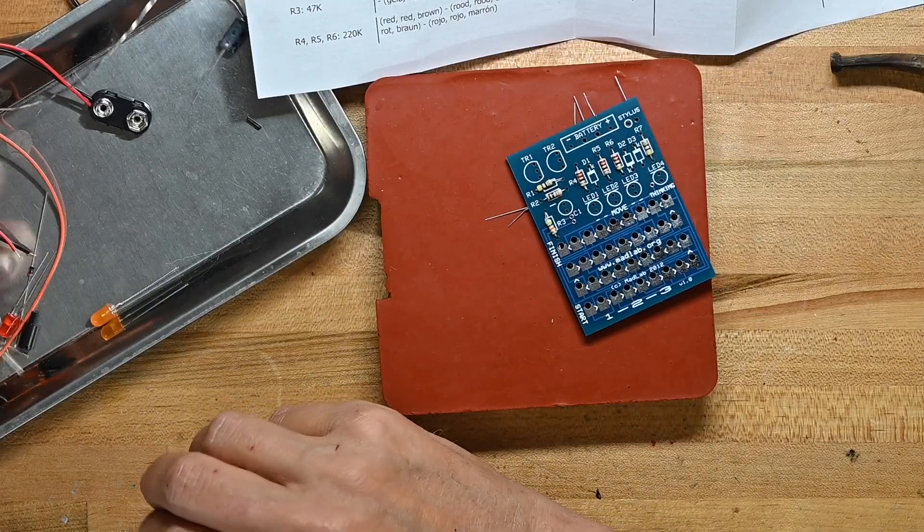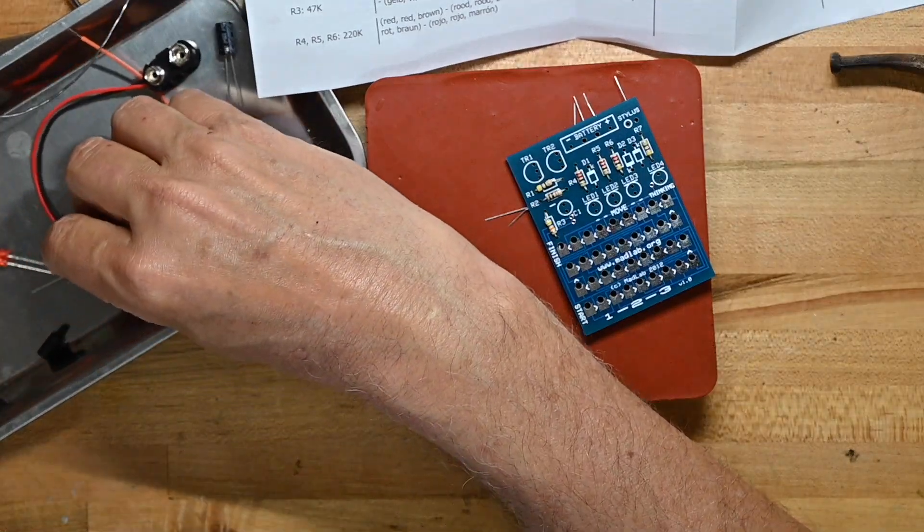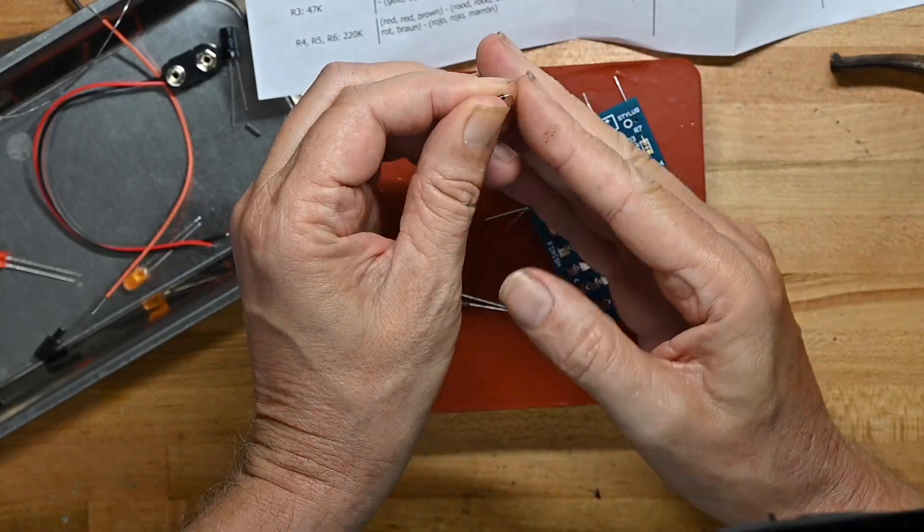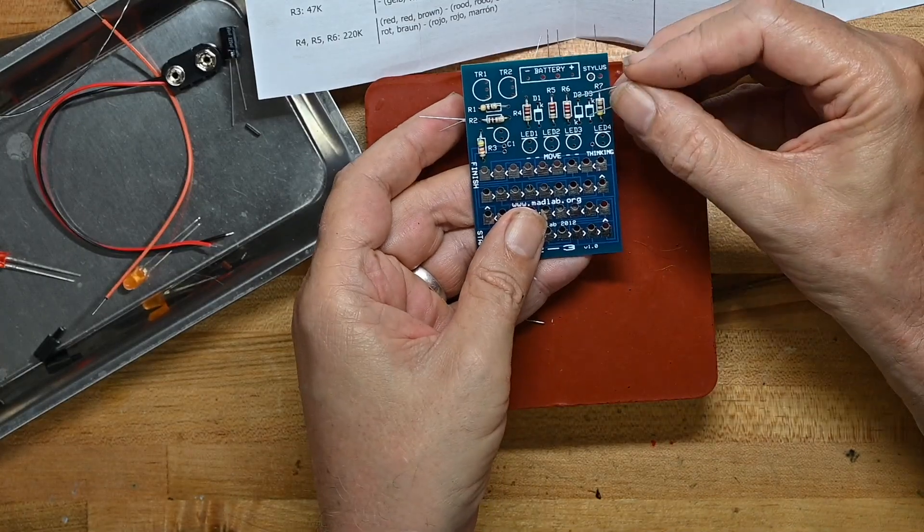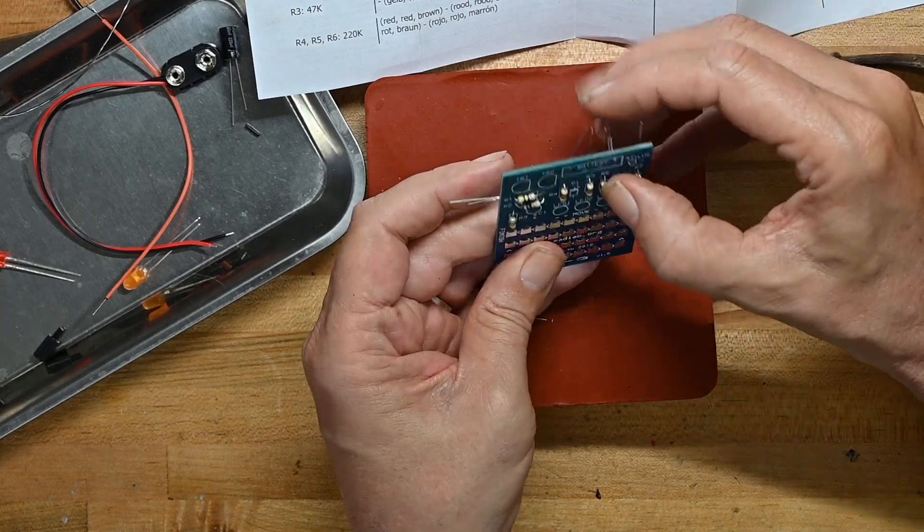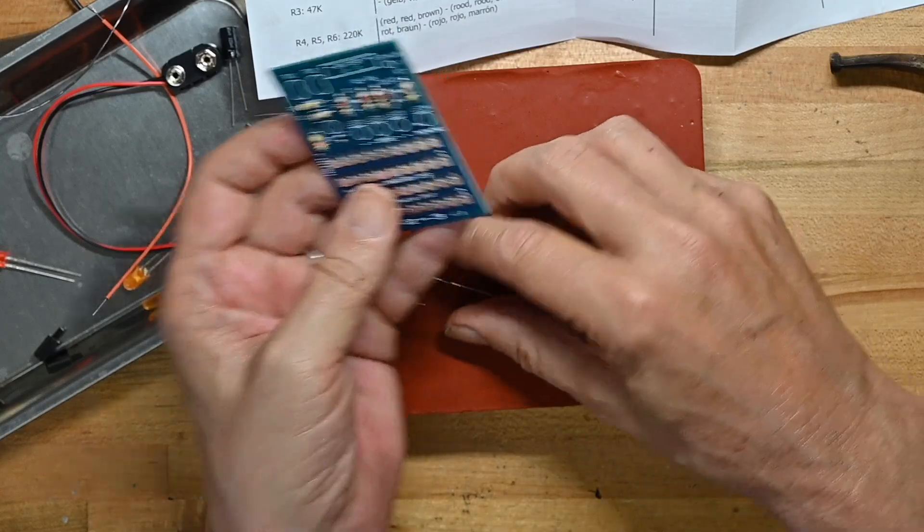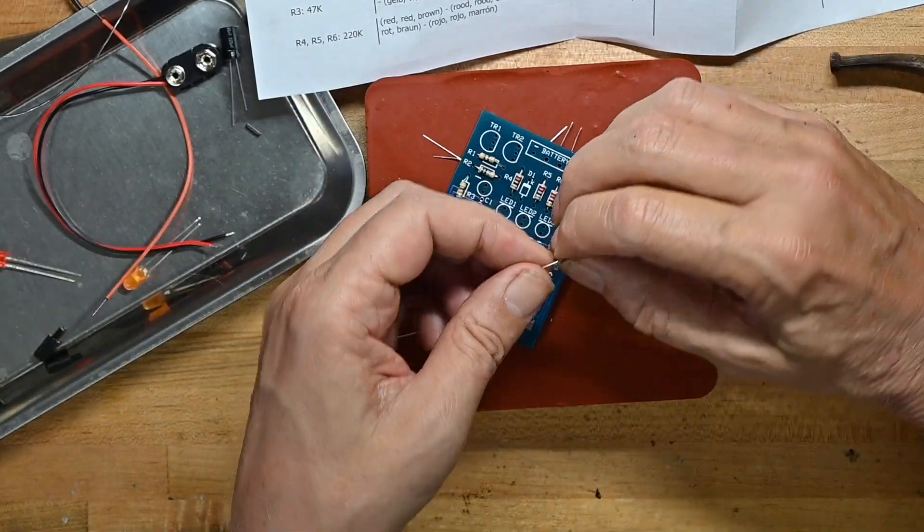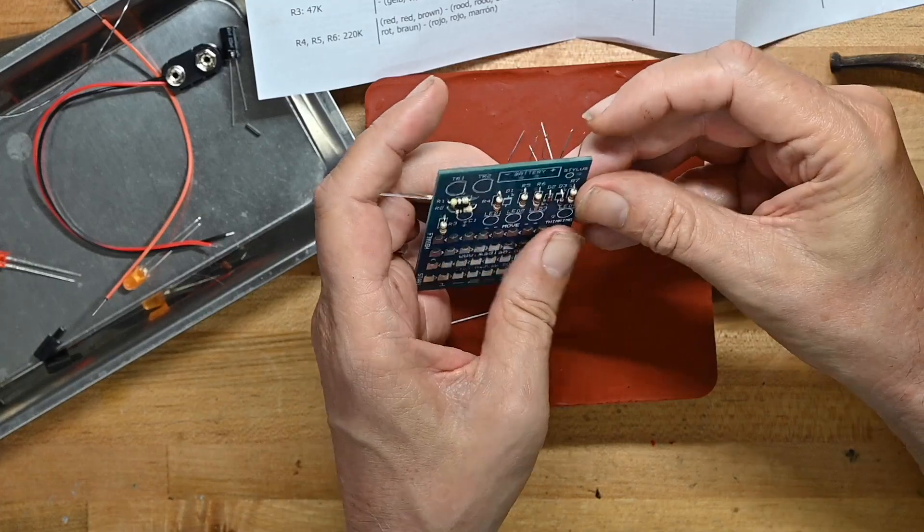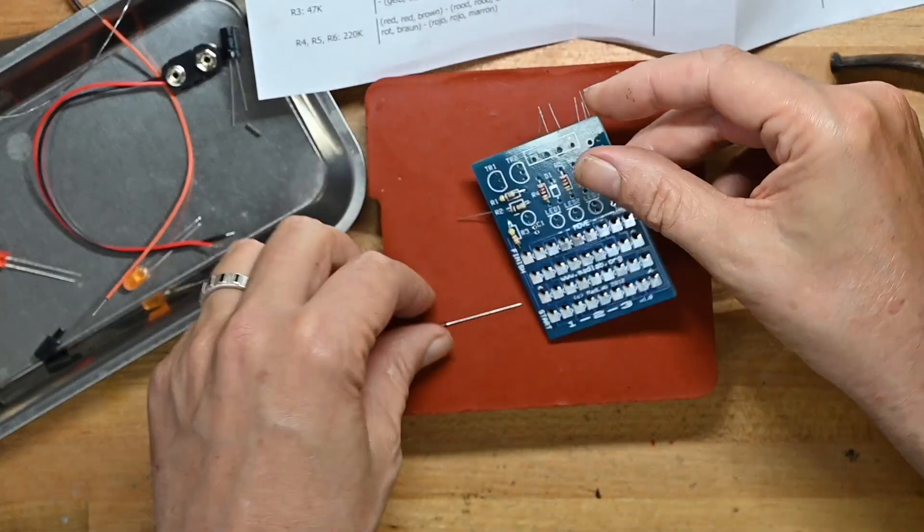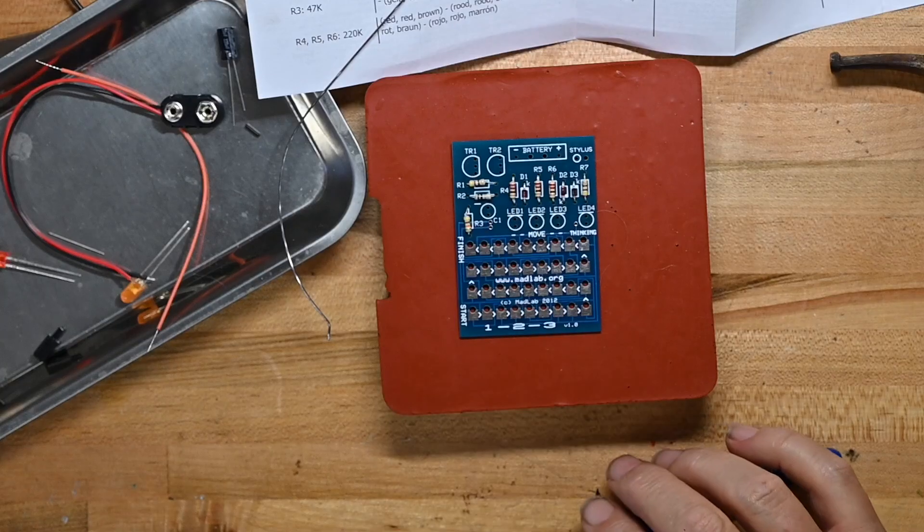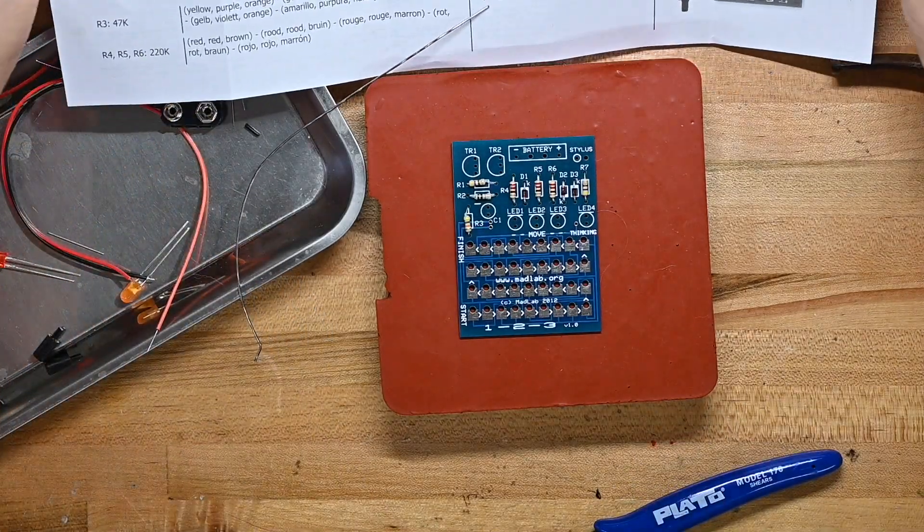We're going to bend the leads a couple of millimeters out from the body instead of right up against the body. And before I solder those down, I may as well put the three diodes on because they have the same layout characteristics as the resistors. And you'll see here there's a heavy white outline to match the black stripe on these 4148 diodes. So it's easy to get them correct. That's all the diodes and resistors.